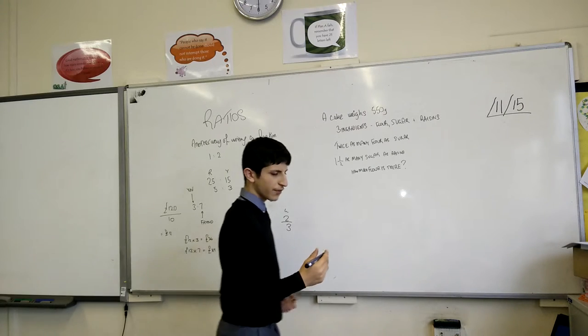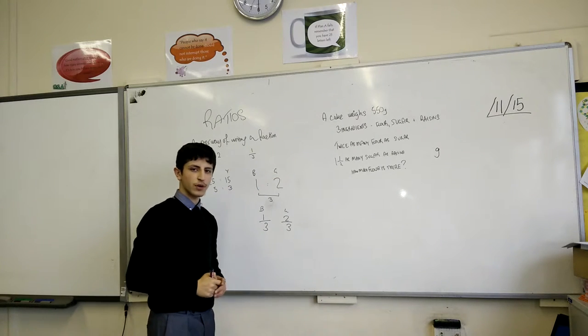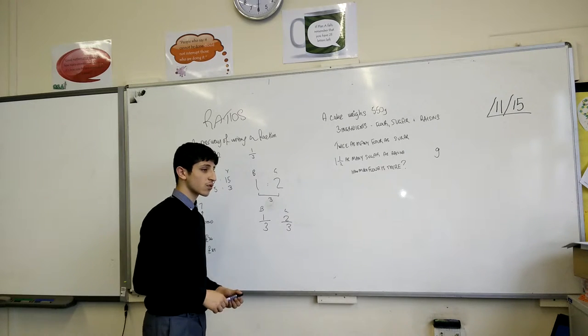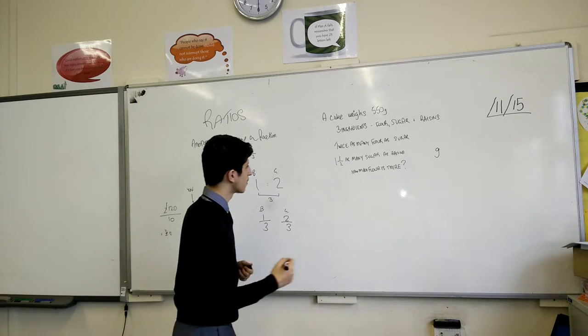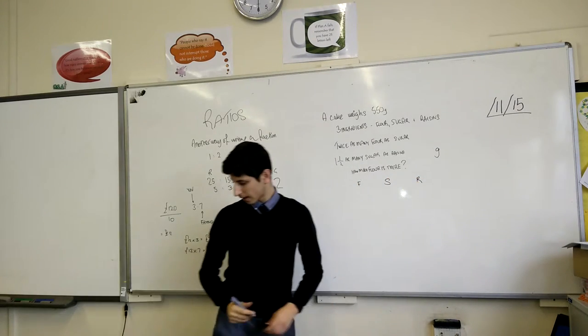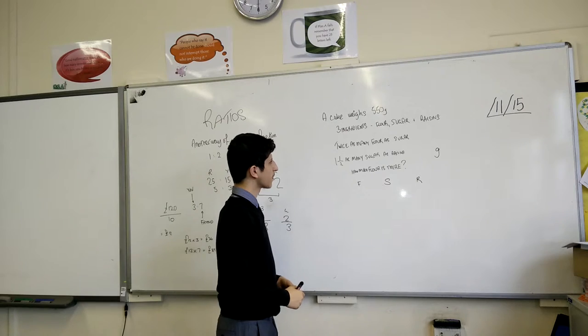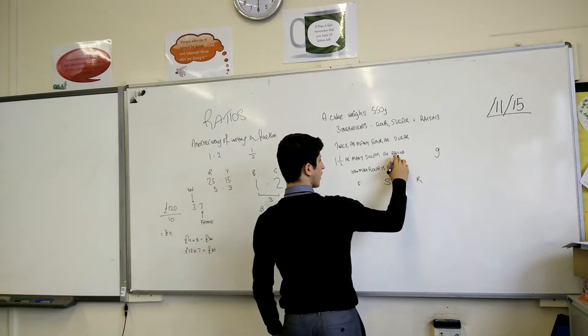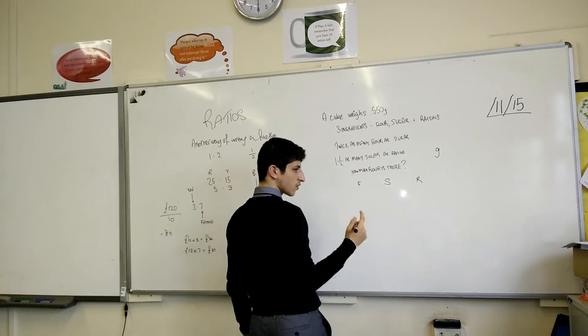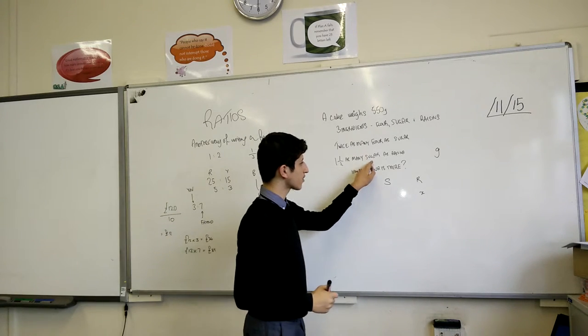Well, let's just, for the purposes, we're just going to say that we're measuring the mass in grams. Because that's what it says in the question, same units. What we're going to introduce here is three parts to this ratio. We're going to introduce the flour, the sugar and raisins. F, S and R. Now, you know that the total mass is 550 grams. You know that if there's twice as many flour as sugar and one and a half times as many sugar as raisins, then you start with raisins as x.